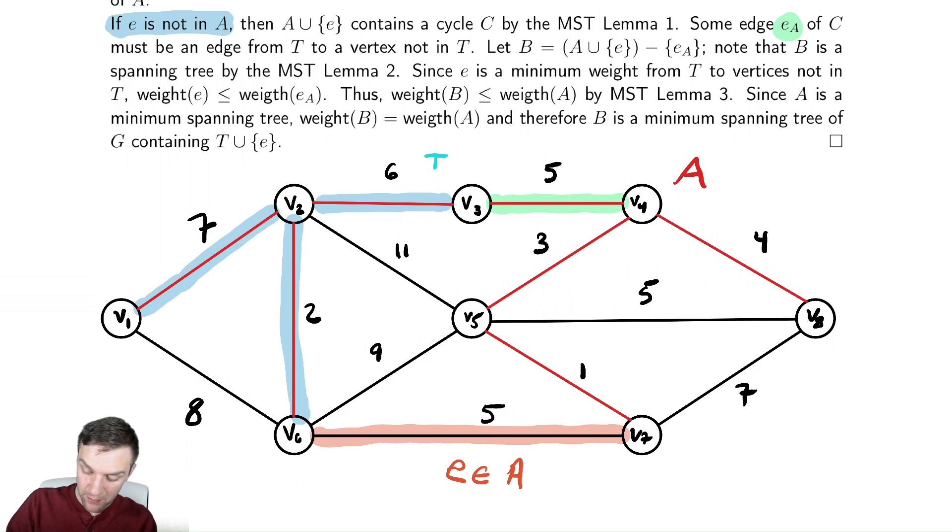And notice that this must be a spanning tree because of part 2 of the lemma we already proved. And now, since E was a minimum weight edge from T to vertices not in T, and E sub A was also that same type of edge, both E sub A and E both connected T to vertices not in T. And this was by definition the minimum one. So, the weight of E must be smaller than or equal to the weight of E sub A, this green edge up here. And therefore, by part 3 of the lemma, we have that the weight of B must be less than or equal to the weight of A. And since A was already a minimum spanning tree, you cannot have that B is actually less than A, so their weights are equal, and therefore B is also a minimum spanning tree. They are not unique. So, you may, in the process of doing this, change which minimum spanning tree you are a subset of, but you will still be a subset of some minimum spanning tree. So, B is a minimum spanning tree, and T union E is a subtree of it.